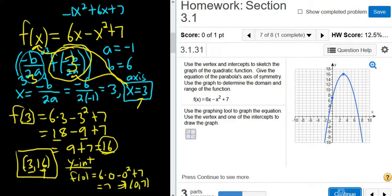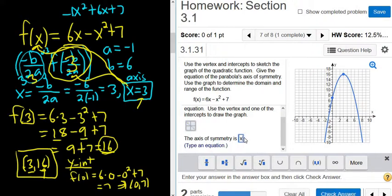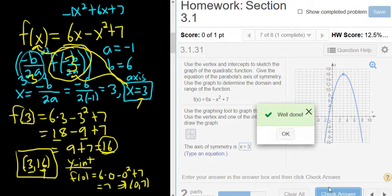Press continue to see more. The axis of symmetry is. So that's this one here. We found it before. x equals 3. And it wants an equation, it even reminds you. Very important to type the equation. So x equals 3. Well done.